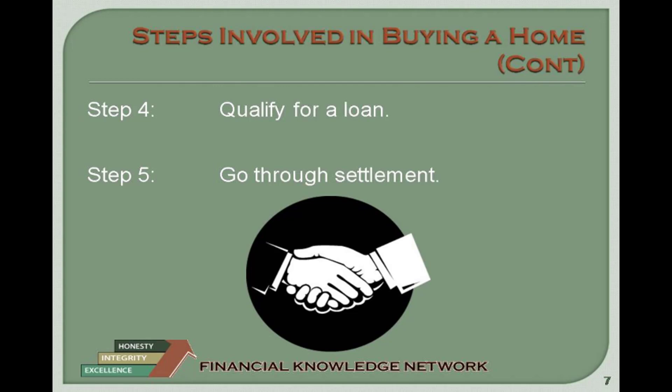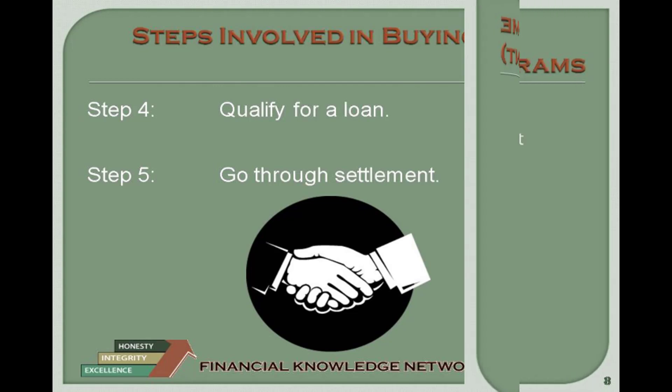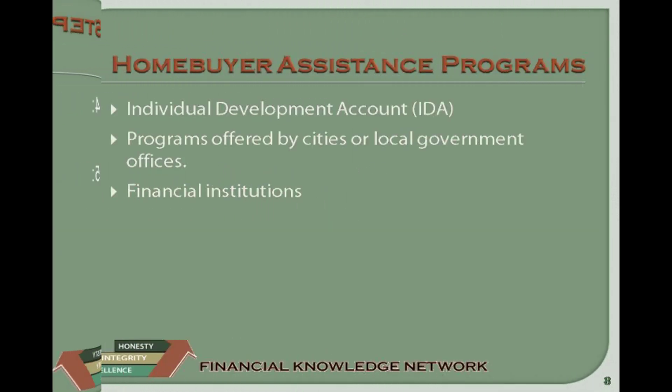Step 5: Complete the purchase. Make an offer, have the house properly inspected, and complete the purchase through the settlement process. There are a number of different programs available for first-time home buyers. Many people start the home buying process with one of these programs or with a program offered by local community organizations. Be sure to ask your financial institution or mortgage counselor what options are available to you.